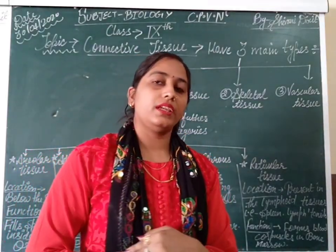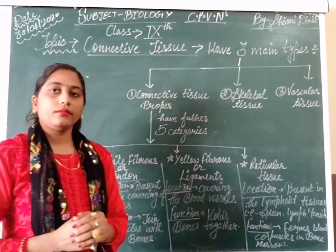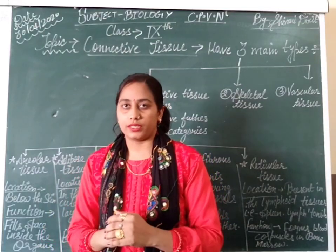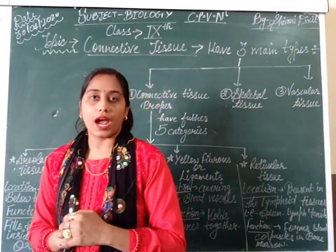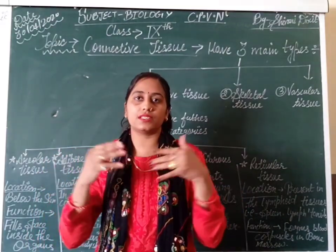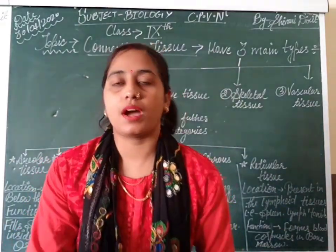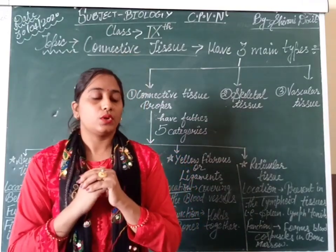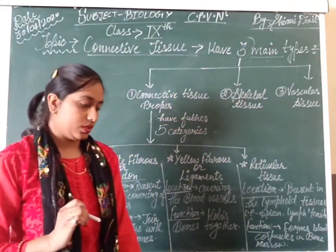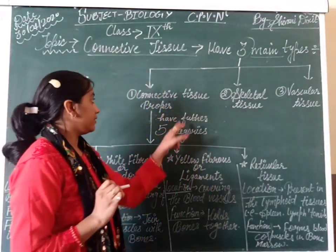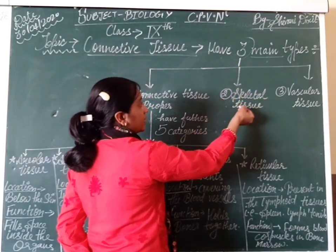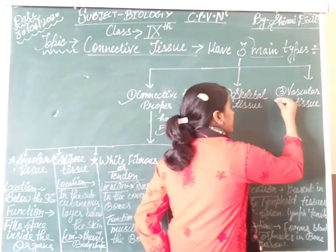Connective tissues are the most abundantly found tissues in the body — almost all body organs contain them. Their main function is to connect all body organs together, binding various parts and organs. There are three types of connective tissue: first, connective tissue proper; second, skeletal tissue; and third, vascular tissue.